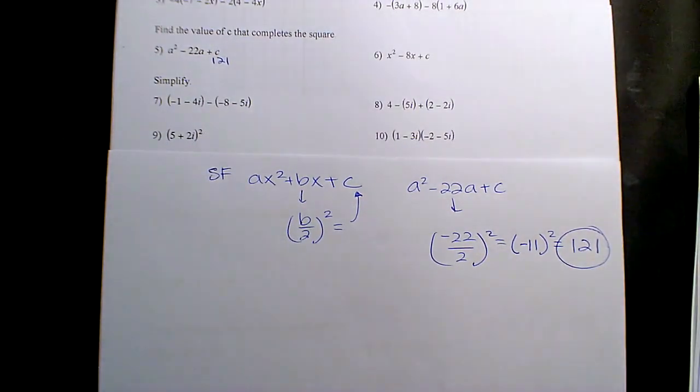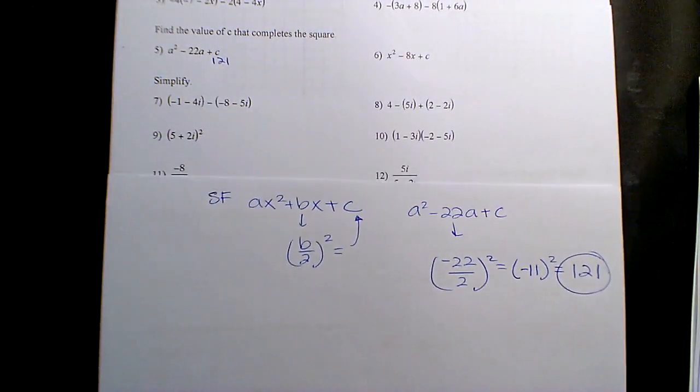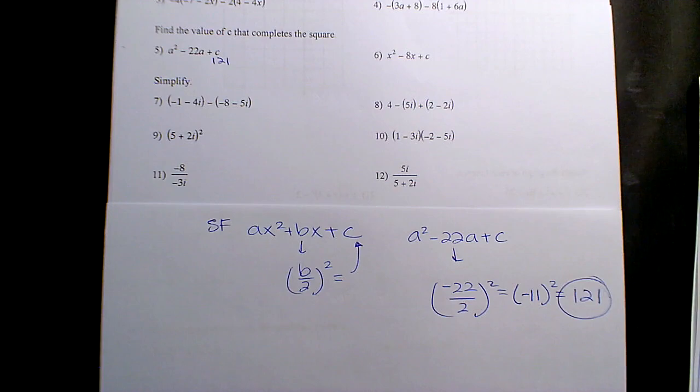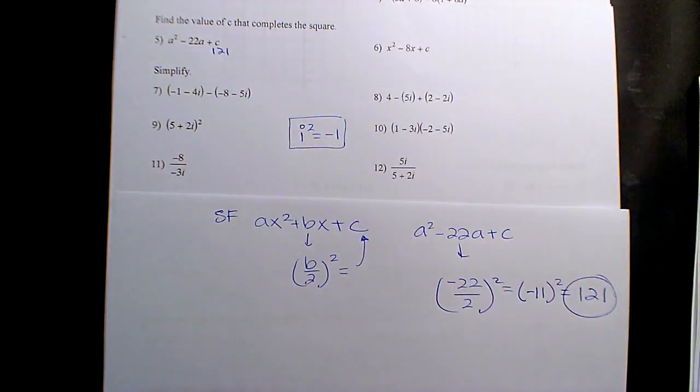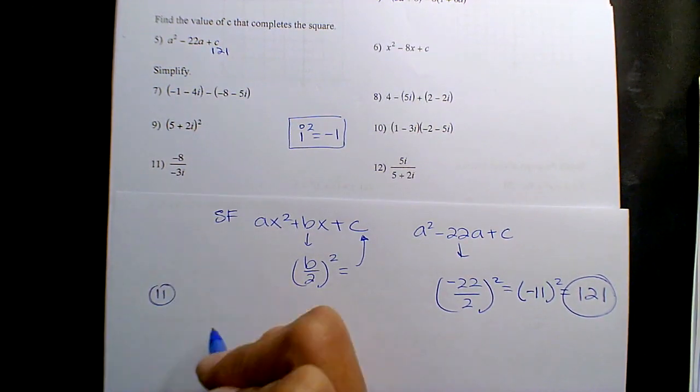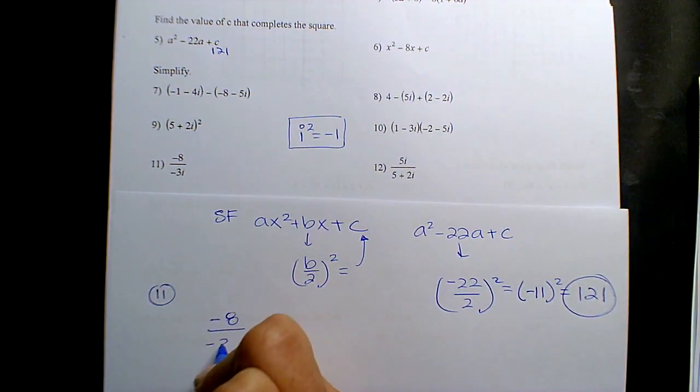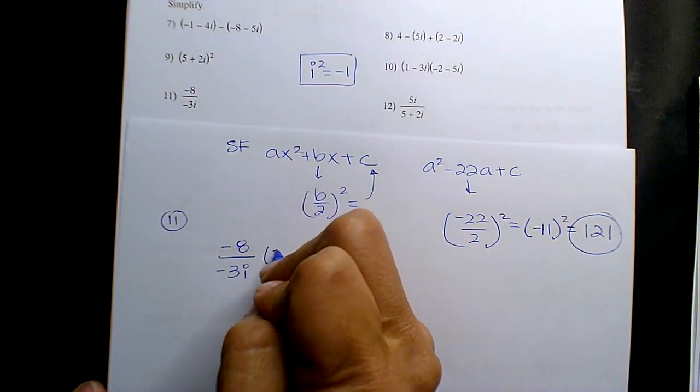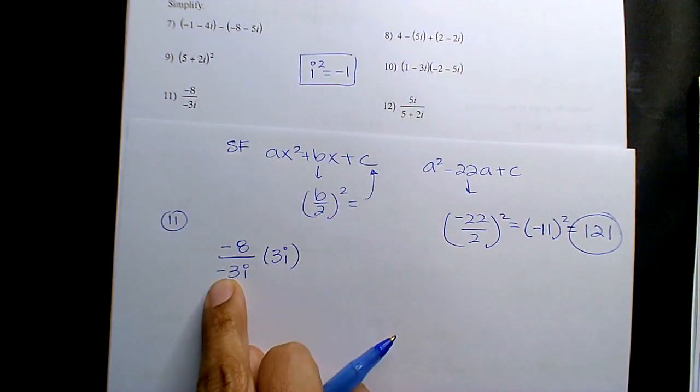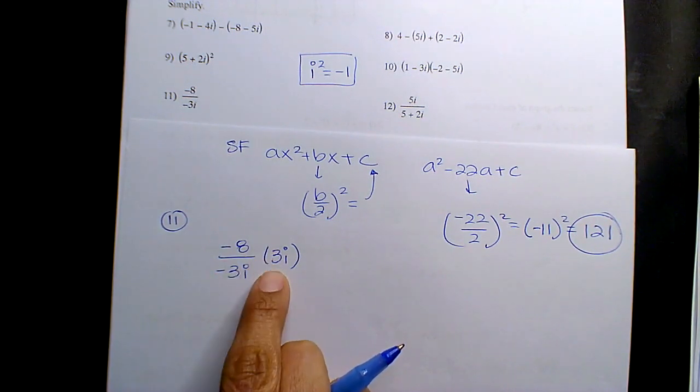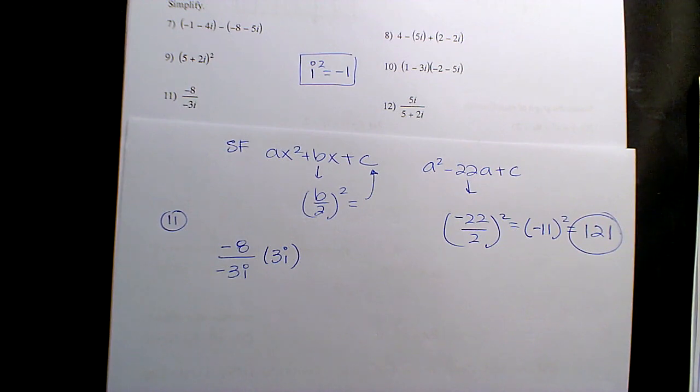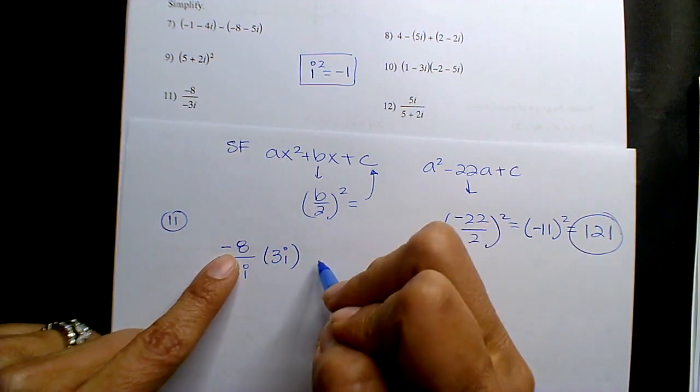All right, you guys just did your test on i's. Remember, i squared is equal to negative 1. Make sure you have that there. So if I solve 11, you guys are really good at it. Just make sure you know to switch that sign. If it's negative, positive. If it's positive, negative. You have to take the conjugate, which is the opposite of the imaginary component.